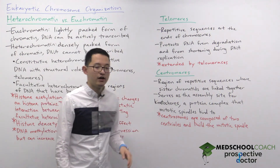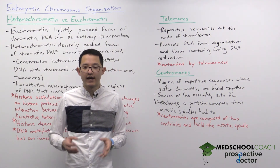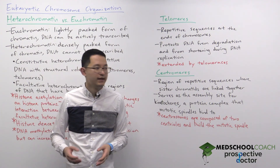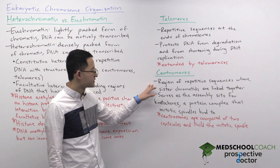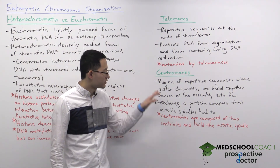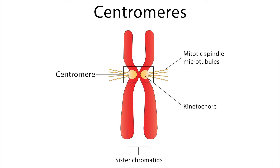Centromeres are also constitutive heterochromatin and are regions of repetitive sequences where sister chromatids are linked together. They serve as the assembly site for kinetochores, which is a protein complex that mitotic spindles bind to during mitosis.